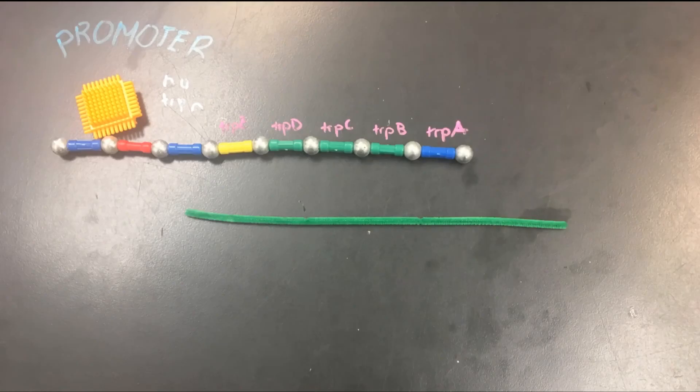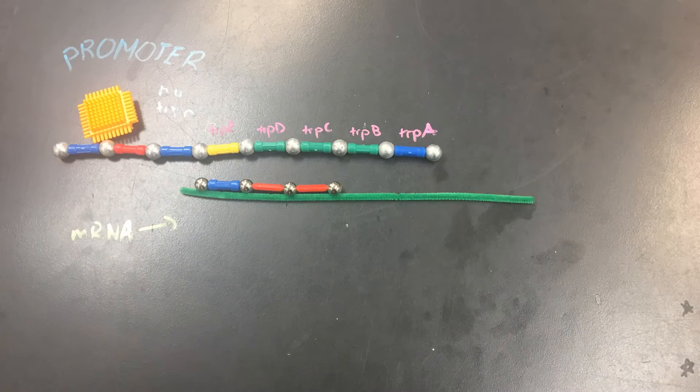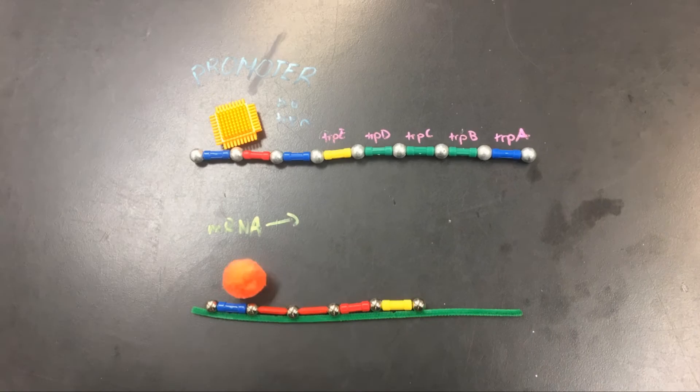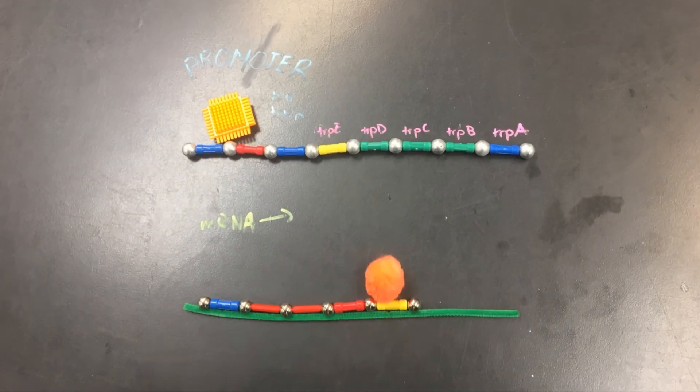Since the promoter activated the gene, mRNA is ready to transcribe. Then the mRNA will translate into tryptophan-producing enzymes.